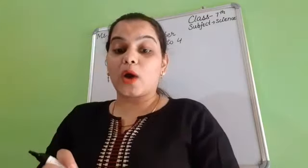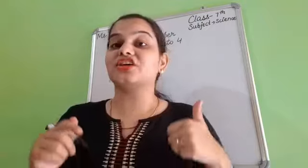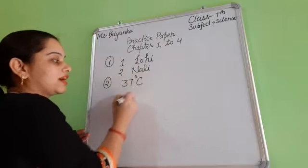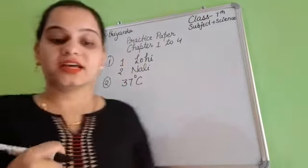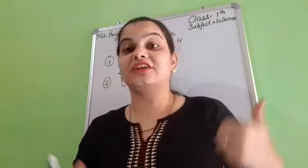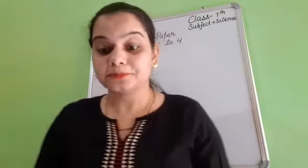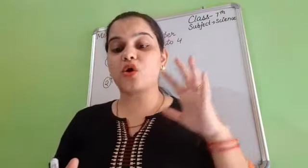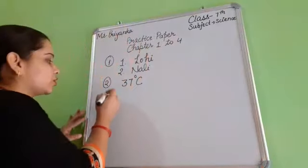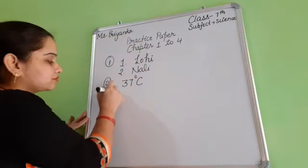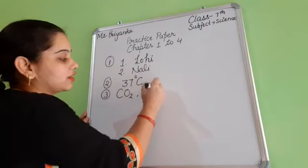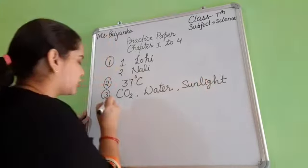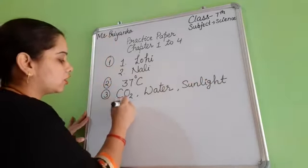Second question: what is the normal human body temperature in Celsius? Celsius ke andar aapko normal human body temperature batana. That is 37 degree Celsius — 37 degree Celsius. And in Fahrenheit, 98.6 degree Fahrenheit. Next: name four things required for photosynthesis. Photosynthesis mein kaun si chaar cheezein required hoti hain? First one — carbon dioxide. Second one — water. Third one — sunlight. And fourth one is chlorophyll.